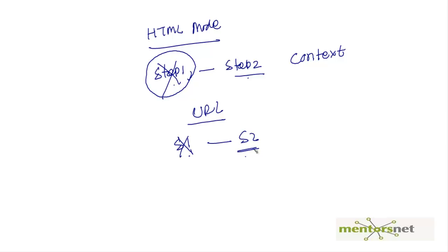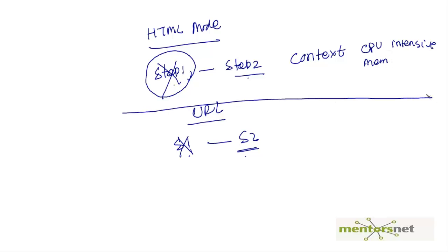Since VUgen tries to parse the intermediary steps in HTML mode, it is more CPU and memory intensive. In URL mode there is no parsing required, so it does not require as much CPU and memory.